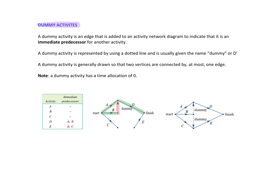To explain: activity A led into D. But B is also a predecessor to D. I can't connect B's line to A's line because it would look the same as activity A but it's not. So we put a dummy line to show that B also has to be completed before D can happen — they are separate activities.